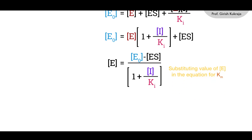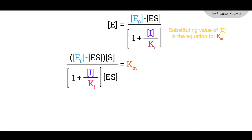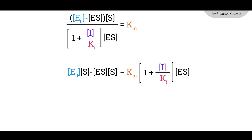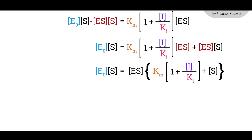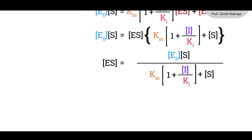Substituting this expression for E into the Km equation: [(E0 − ES) · S] / [(1 + I/Ki) · ES] = Km. Cross-multiplying: E0 · S − ES · S = Km · (1 + I/Ki) · ES. Bringing terms together: E0 · S = ES · [Km · (1 + I/Ki) + S]. Therefore, ES = (E0 · S) / (Km · (1 + I/Ki) + S).